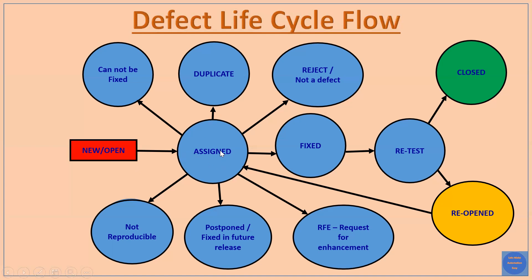The developer analyzes the bug and finds that the bug cannot be fixed. The reason is typically that the issue cannot be fixed in the technology used in the software development — for example, if the software uses Java or C# and the fix is not possible in that particular language. In that case, the developer marks the bug as 'Cannot Be Fixed'.